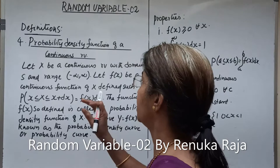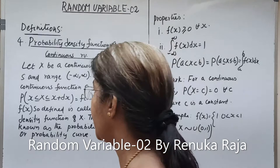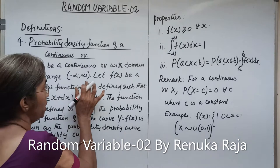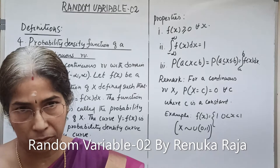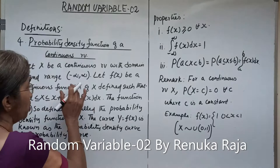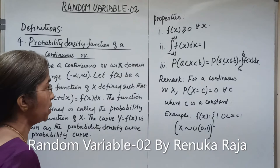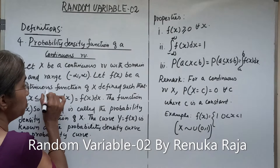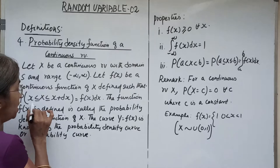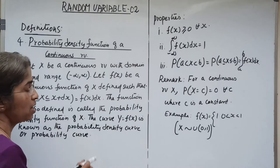We consider x to be a continuous random variable with a domain — a sample space — and range the interval minus infinity to infinity. That is, the domain of the random variable is the sample space, and the range is the set of real numbers. We define f of x such that the probability x less than or equal to X less than or equal to x plus dx equals f of x dx.